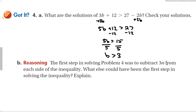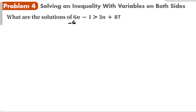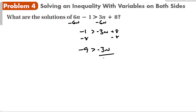The first step in problem 4 was to subtract 3n from both sides. What else could have been the first step? We could have subtracted 6n from both sides, giving negative 1 is greater than negative 3n plus 8. Subtracting 8 gives negative 9 is greater than negative 3n. When dividing by negative 3, switch the inequality sign. The first approach gave n > 3; this approach gives 3 < n — the same answer, just using the reflexive property. However, having to remember to switch the sign gives one more chance to make a mistake, which is why the first method is preferred.